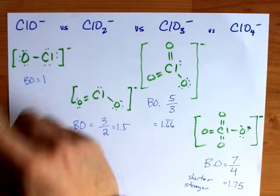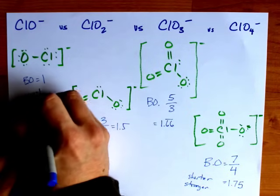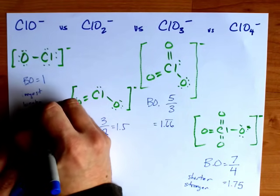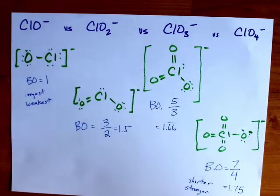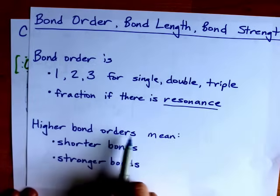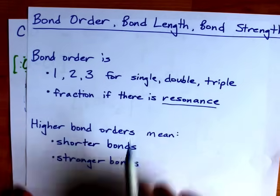Among these though, this is going to be the longest and weakest bond of all of them. And that's the way it works, because bond order helps you predict the length and strength of the bonds.